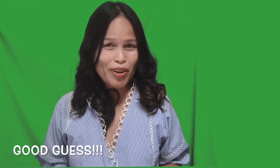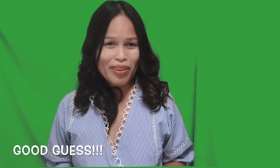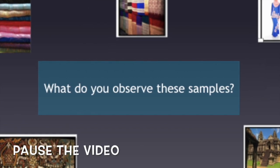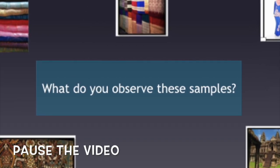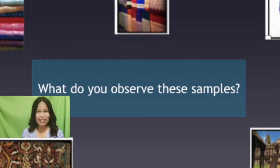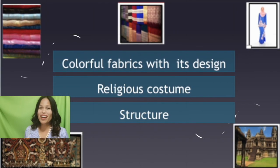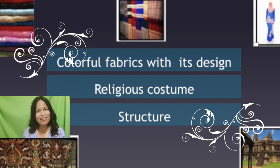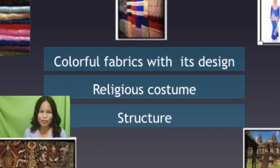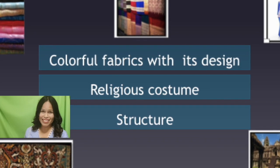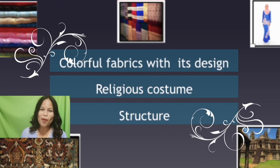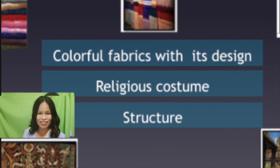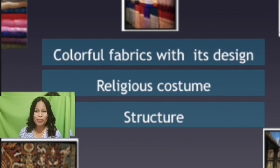Follow-up questions from your previous activity. What do you observe about this sample? You might have different answers. But the obvious answers from these samples are: colorful fabric with its design, costume of Muslim, and structure. If you got this observation, that is correct.